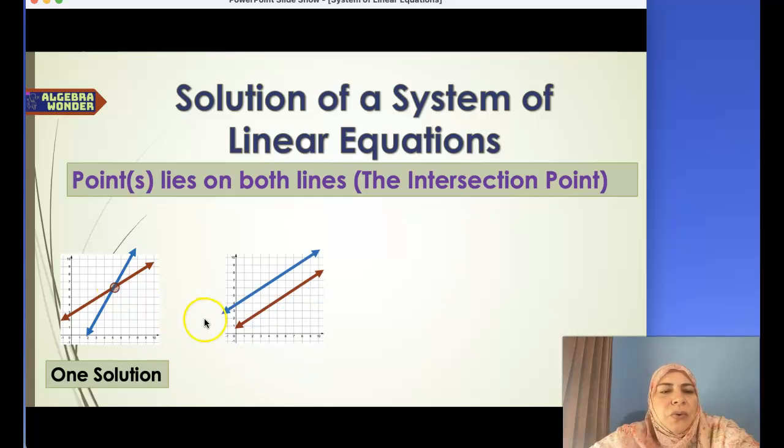But what happens if the two lines are parallel? This means they have the same slope but different y-intercepts. In this scenario, we have no solution. There is no point of intersection, no point that lies on both lines that makes both equations true.